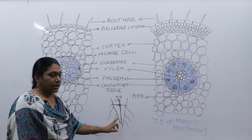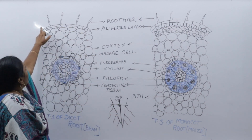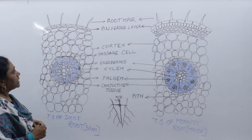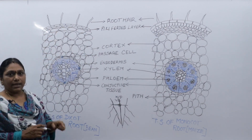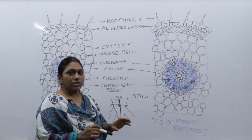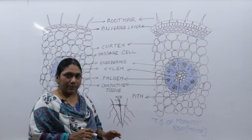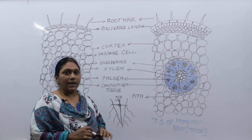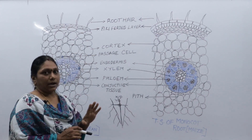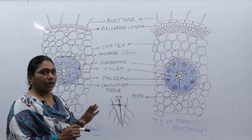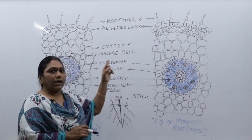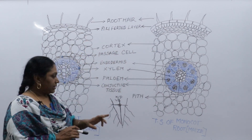When we draw the dicot root, this is the outer layer. The outer layer is called as piliferous layer, or rhizodermis, or epiblema. In the root, the outer layer is called as epiblema or piliferous layer — this is an important question they may ask.